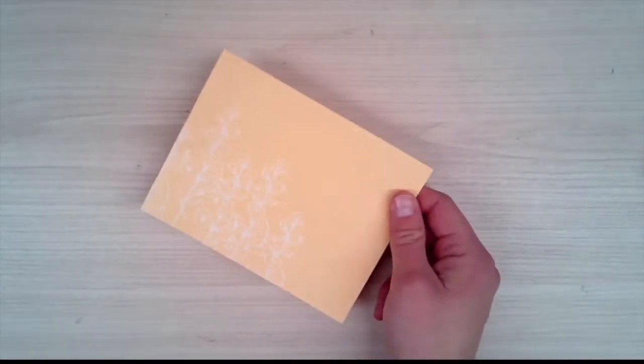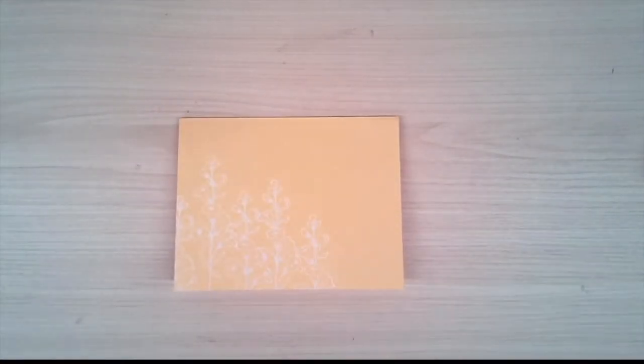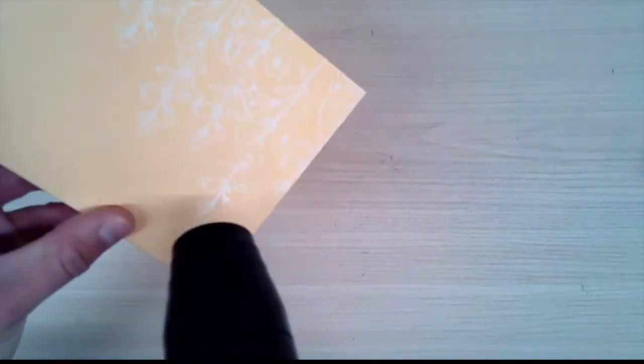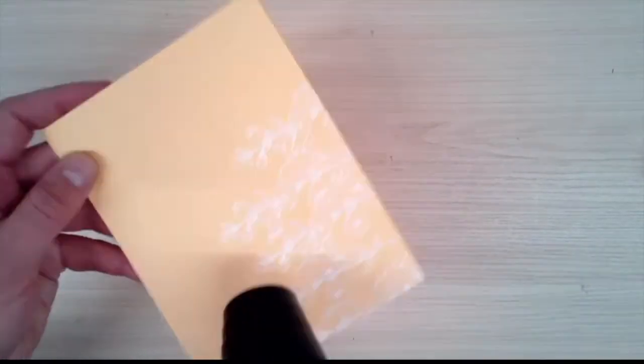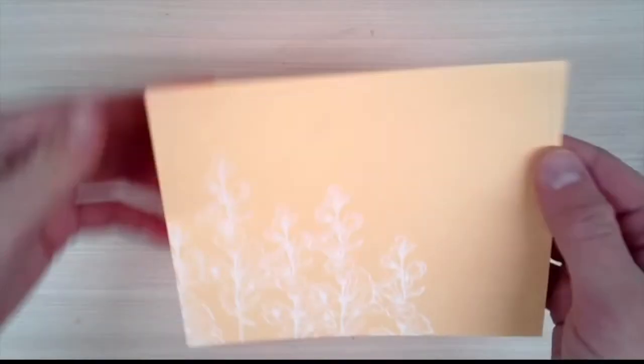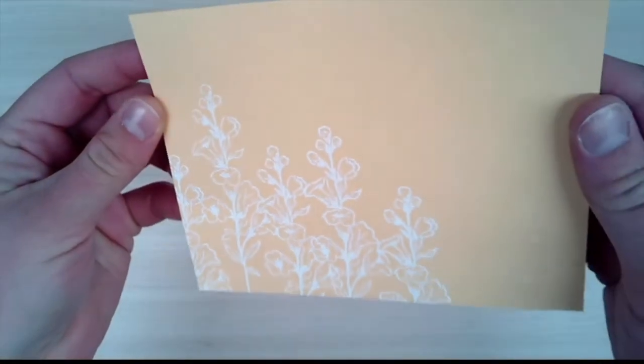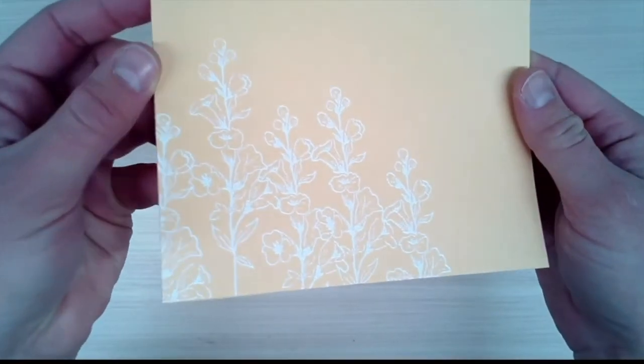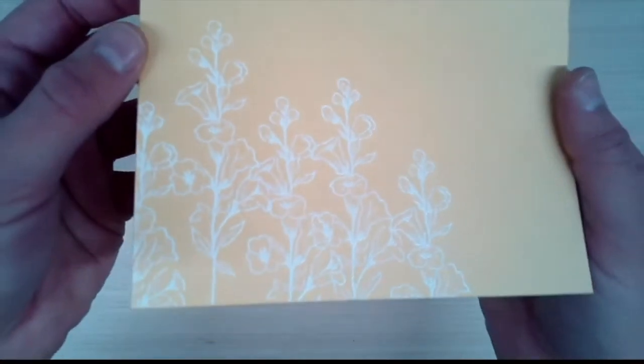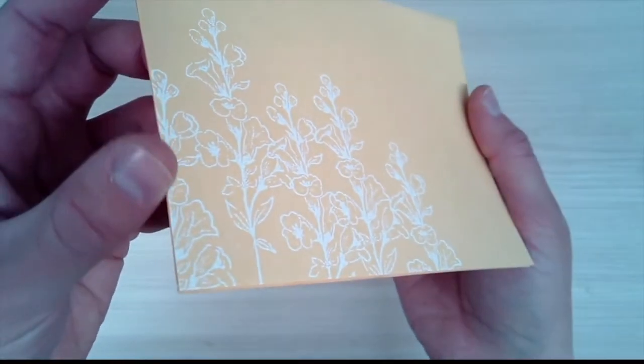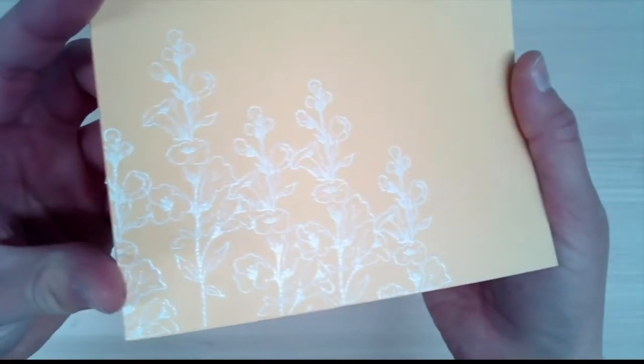After you do that, grab your heat tool and we're going to heat it until it heats up and looks shiny. Now you should be able to see it has a nice shiny look and the image came out beautifully with no crackled or missing spots.